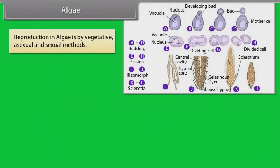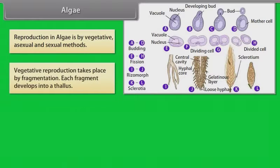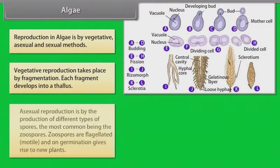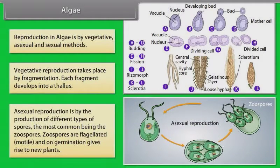Reproduction in algae is by vegetative, asexual, and sexual methods. Vegetative reproduction takes place by fragmentation. Each fragment develops into a thallus. Asexual reproduction is by the production of different types of spores. The most common being the zoospores. Zoospores are flagellated, motile, and on germination gives rise to new plants.